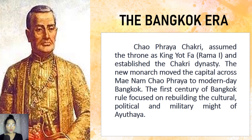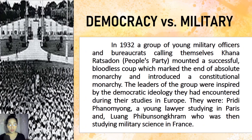The new monarch moved the capital across the Chao Phraya to modern-day Bangkok. The first century of Bangkok rule focused on rebuilding the cultural, political, and military might of Ayutthaya. In 1932, a group of young military officers and bureaucrats calling themselves Khana Ratsadon, meaning 'People's Party,' were deeply dissatisfied with the tight political control of Siam's ruling families. They mounted a successful but bloodless coup, marking the end of absolute monarchy.